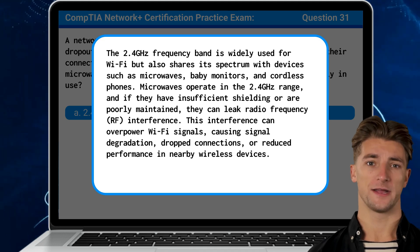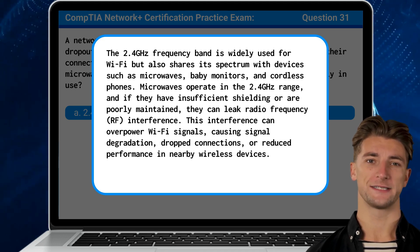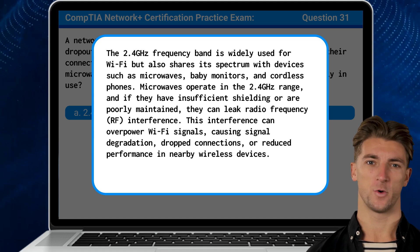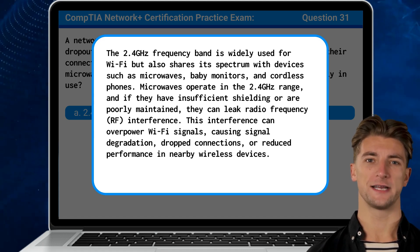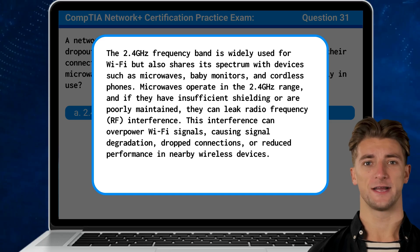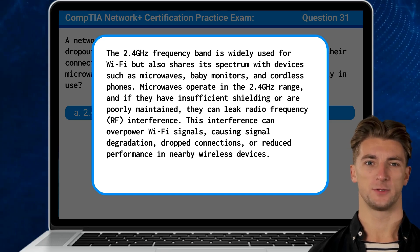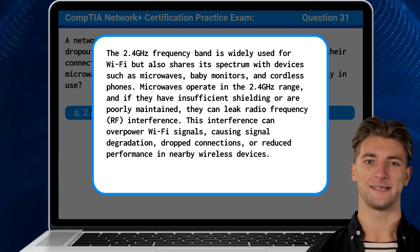Microwaves operate in the 2.4 GHz range, and if they have insufficient shielding or are poorly maintained, they can leak radio frequency interference. This interference can overpower Wi-Fi signals, causing signal degradation, dropped connections, or reduced performance in nearby wireless devices.